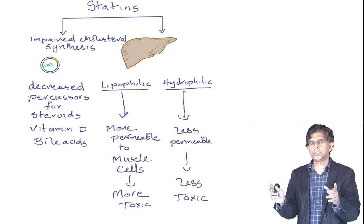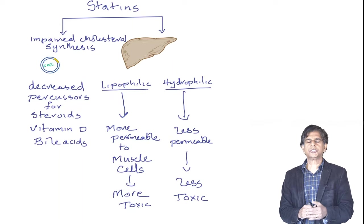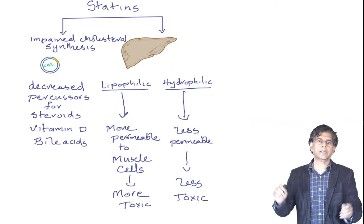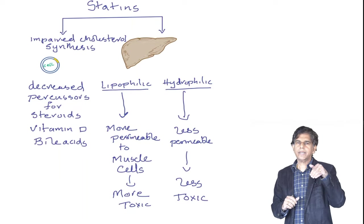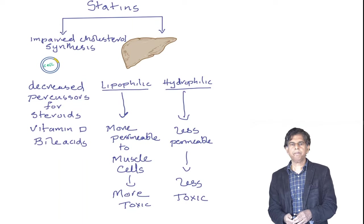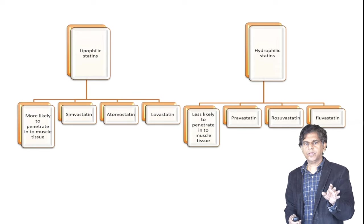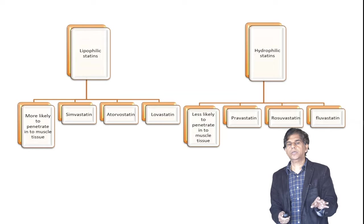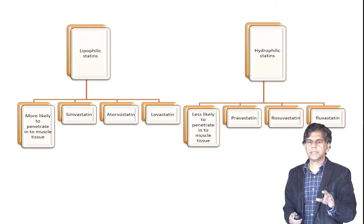There are two types of statins: lipophilic and hydrophilic. Lipophilic statins are more permeable to muscle cells, so they can penetrate muscles and cause more side effects. Hydrophilic statins are less permeable and therefore less toxic. Lipophilic statins include simvastatin, atorvastatin, and lovastatin — they carry higher risk. Hydrophilic statins include pravastatin, rosuvastatin, and fluvastatin.